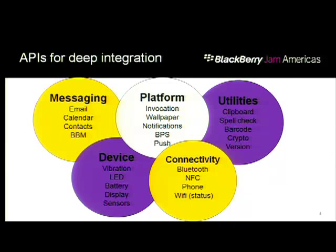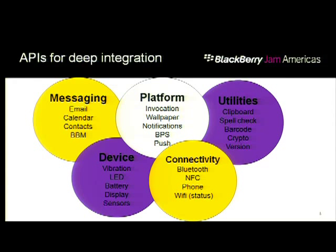We just released a whole bunch of APIs. We now have messaging APIs — email, calendar, contacts — in the new beta. BBM is huge functionality. Invocation is a big thing, and I'll show you how to use the invocation framework. There are also APIs for wallpaper, push, connectivity, and hardware components like vibration, LED, and battery — if there's any hardware component you want to access, we now have APIs for it.